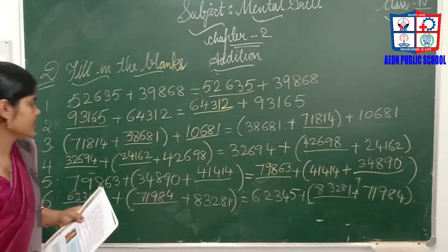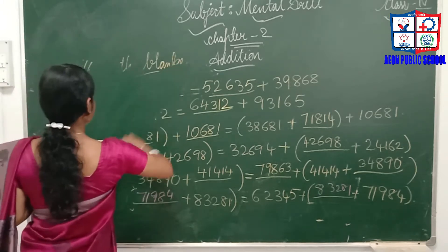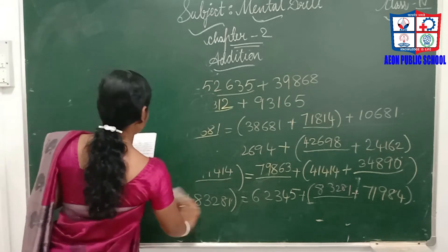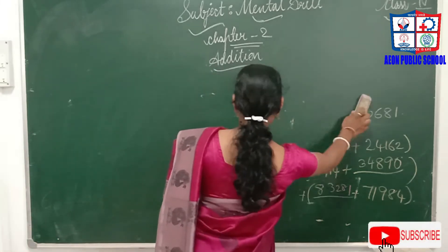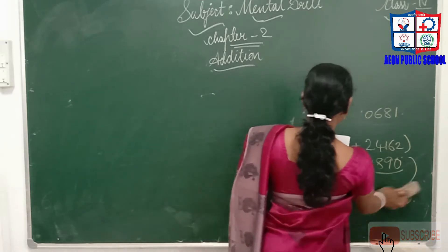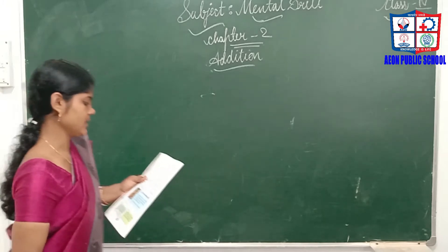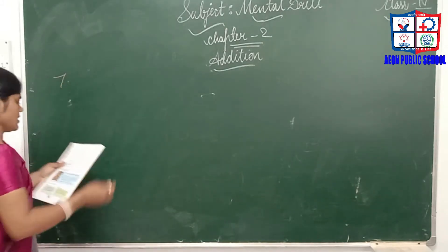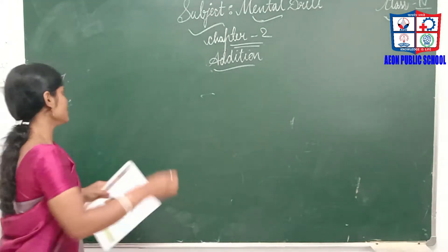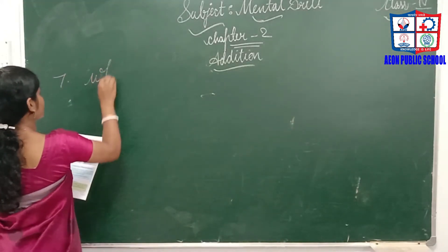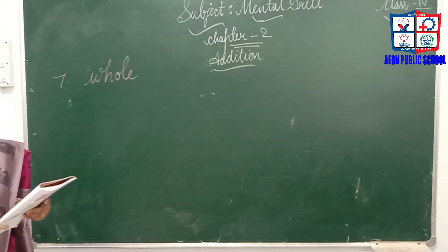Hope you understood. The seventh one: the closure property of addition states that the sum of two whole numbers is a whole number. So the closure property says: the sum of two whole numbers is a whole number — the numbers we are adding should be whole numbers.